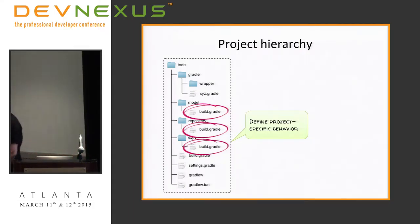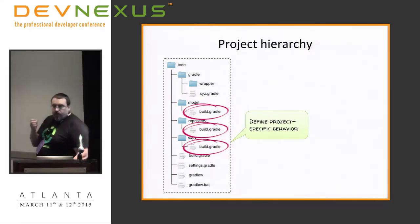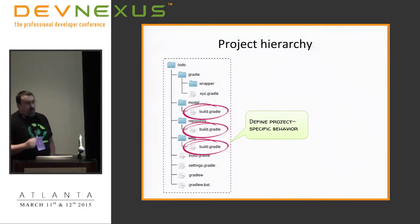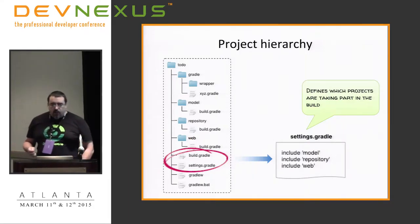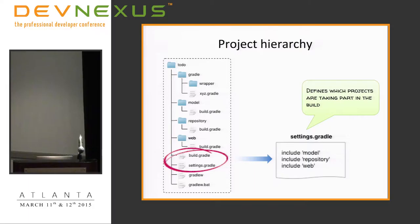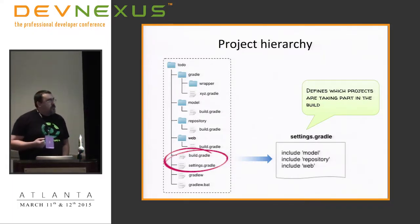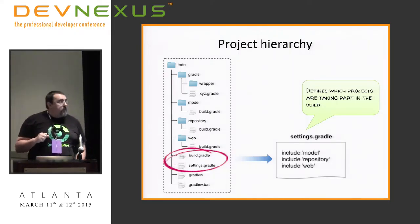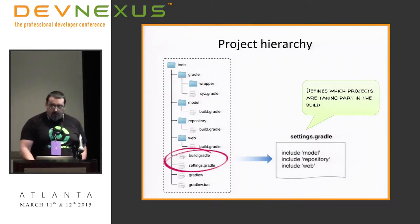I'll have build.gradle files that represent project-specific behavior for each of those projects — stuff that specifically applies to the model project or the web project. At a higher level, I'll have a build.gradle that injects common configuration across all sub-projects, as well as a settings.gradle that binds all of these projects together into a multi-project build within Gradle. The settings.gradle would include each of the different projects. With Gradle, I can then run any or all of the different build tasks within my project from the top level.